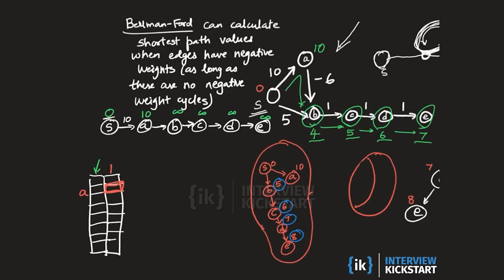In the next step we fill in the next column, updating shortest path values using up to two edges. When we try to update the shortest path value for vertex b, we note that a is a predecessor of b. Since the shortest path value to a using at most one edge is 10, the shortest path value to b through a using at most two edges is 10 plus minus 6, which equals 4. So we update the shortest path value to b to be 4.